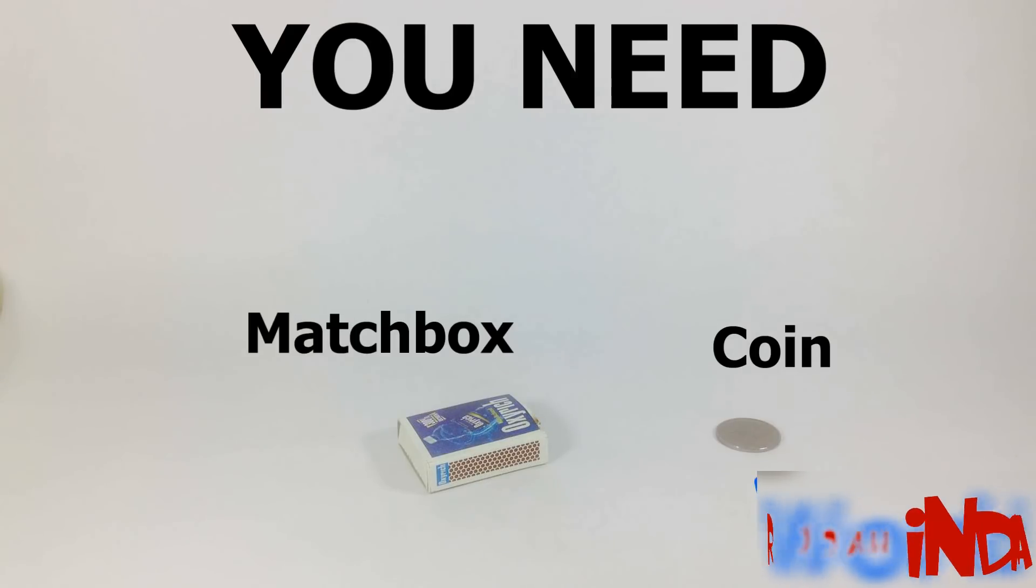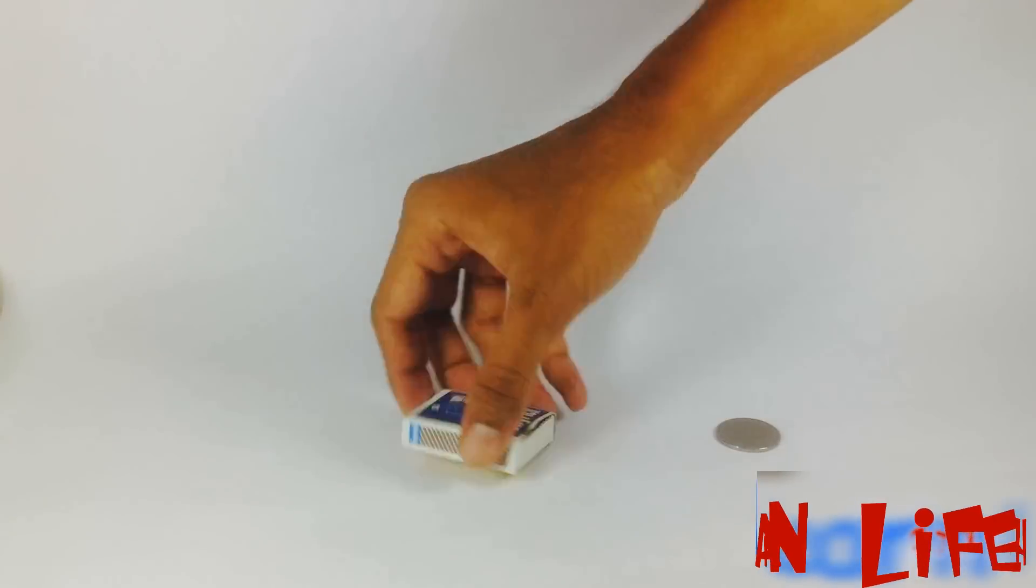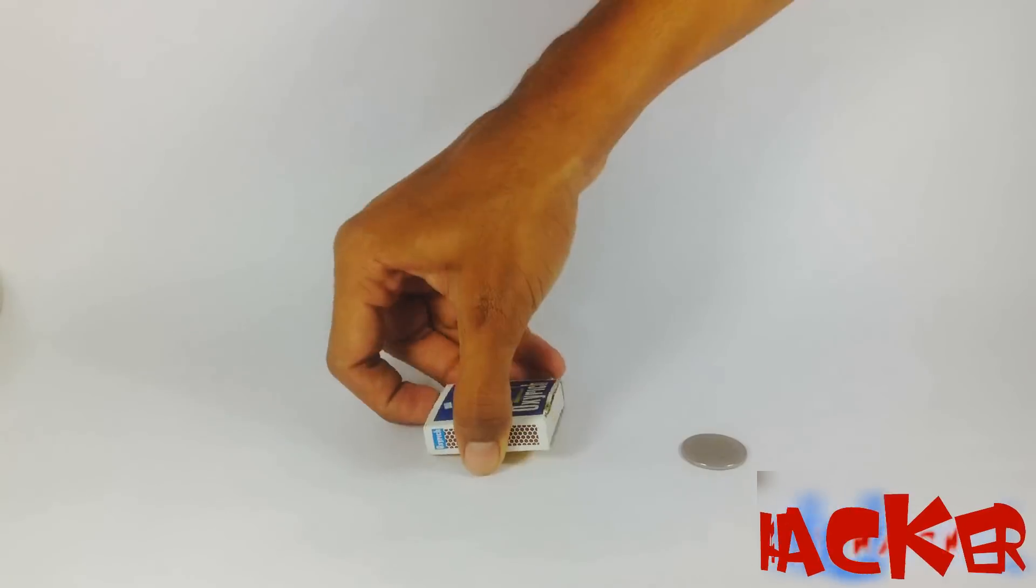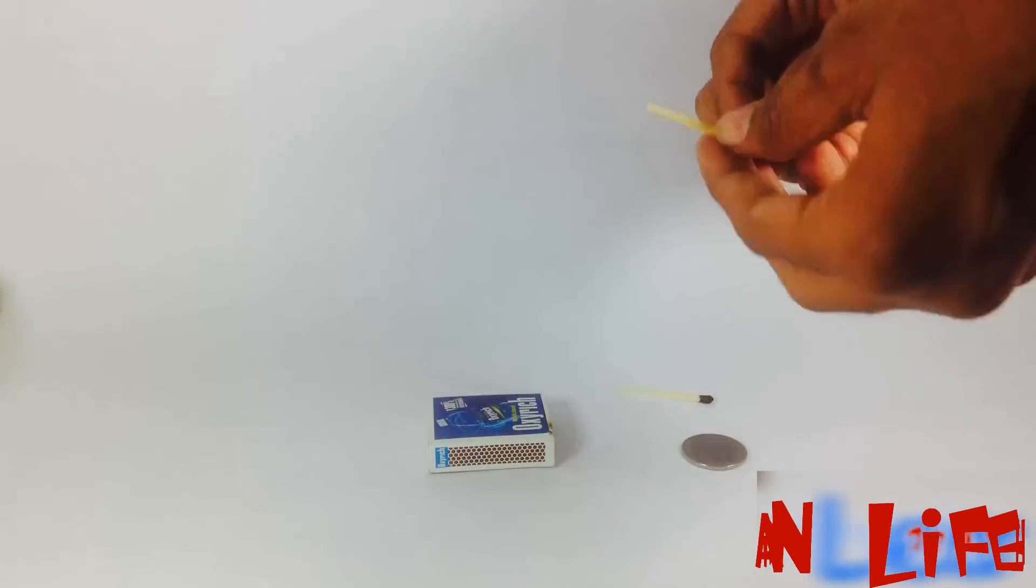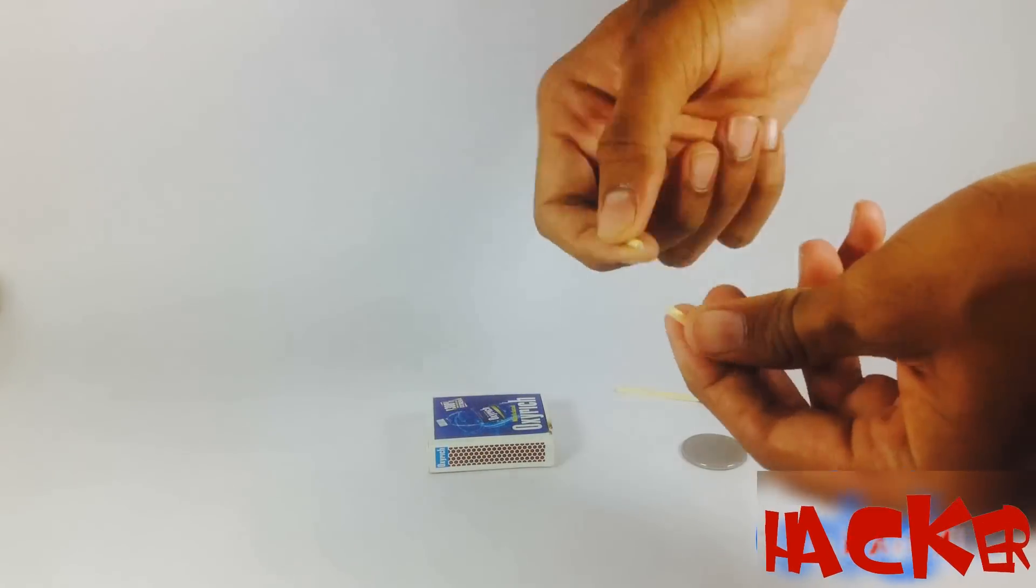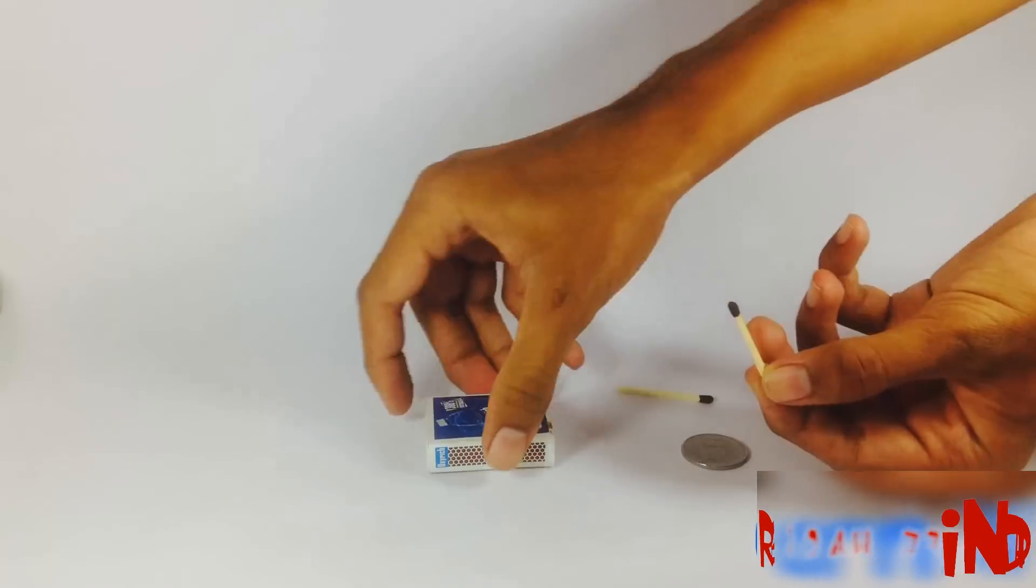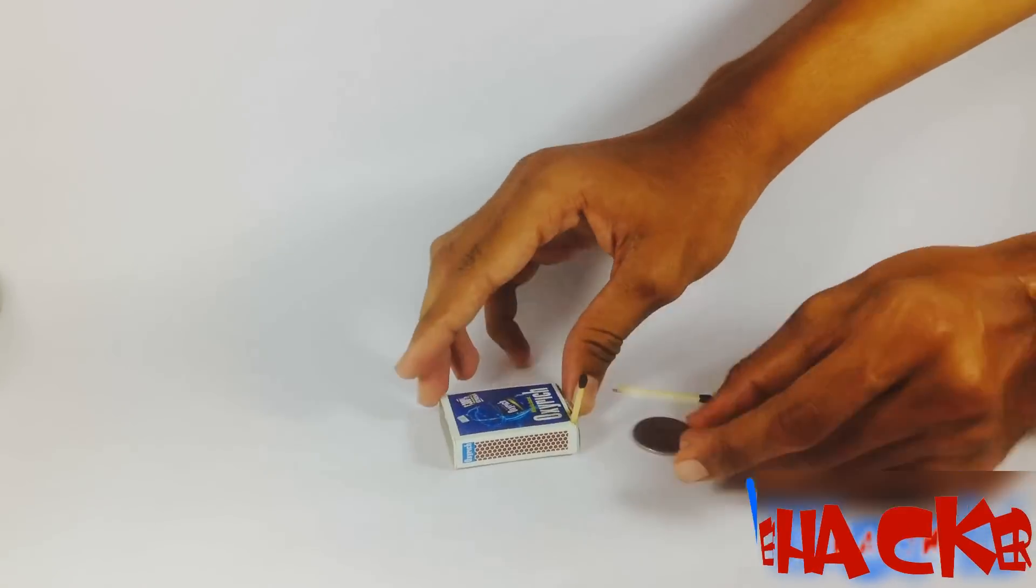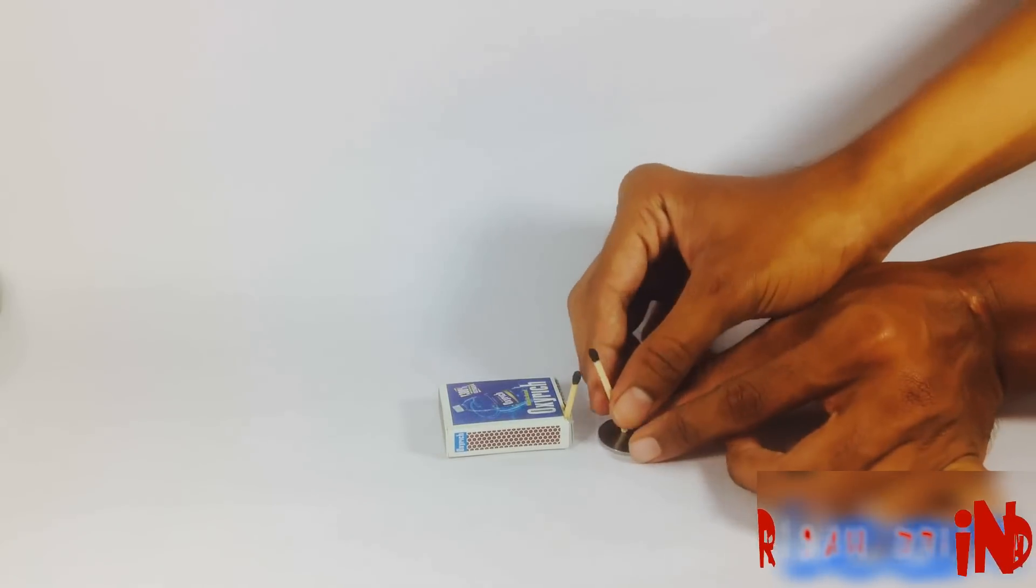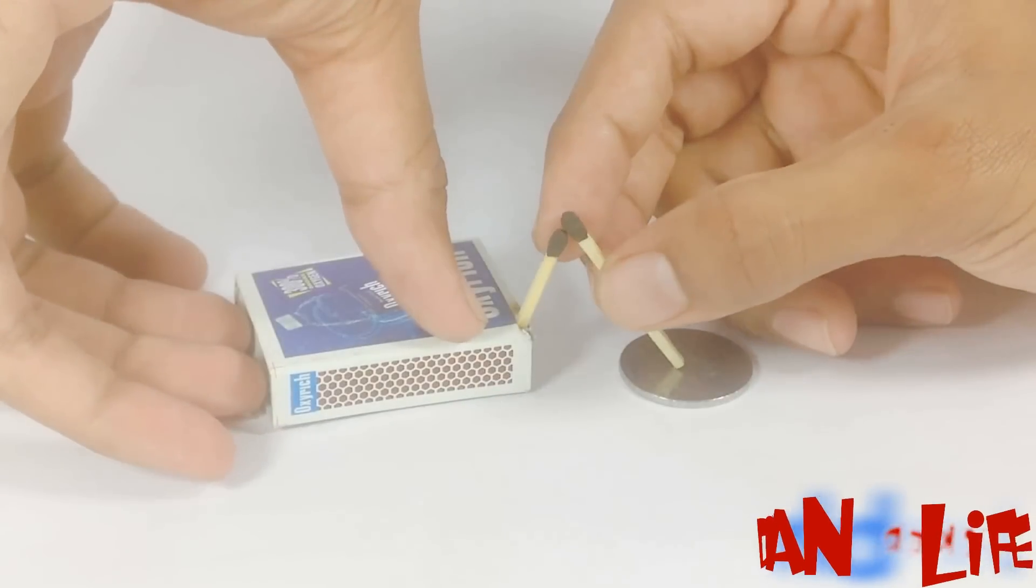Hello everyone, here I will show you one cool magic trick. For that you need one coin and one matchbox. Now take two matchsticks, break one of them and fix it on the matchbox, and place the second matchstick on the coin like this.